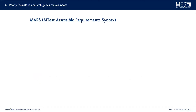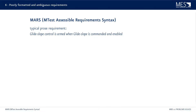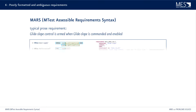Let's have a look at MARS, the MTest assessable requirements syntax. If we look at a typical PROS requirement: 'Glide slope control is armed when glide slope is commanded and enabled.' Notice the terms armed, commanded, and enabled — apparently they are states of signals not clearly defined or identified. So first, your requirement is lacking the information about which signal is meant — the actual name of the signal in the interface of the model — to let the tester know what input to stimulate, and what the definitions of armed, commanded, and enabled actually are.